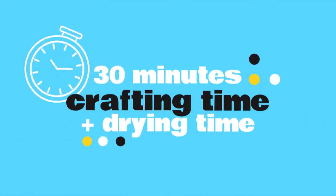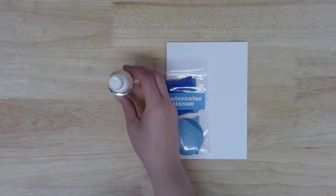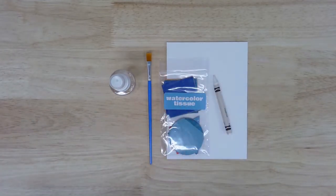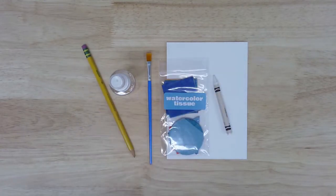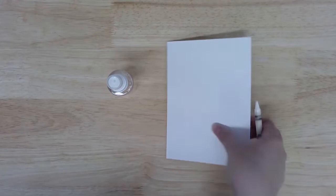Today's project will take most makers about 30 minutes to complete plus a few hours of drying time. Here's what you'll find inside this month's kit: one watercolor canvas, one bag watercolor tissue, one spray bottle, one paintbrush, and one white crayon. From home you might also want a pencil and some washi or masking tape. Take a moment to gather your materials and then we'll get started.